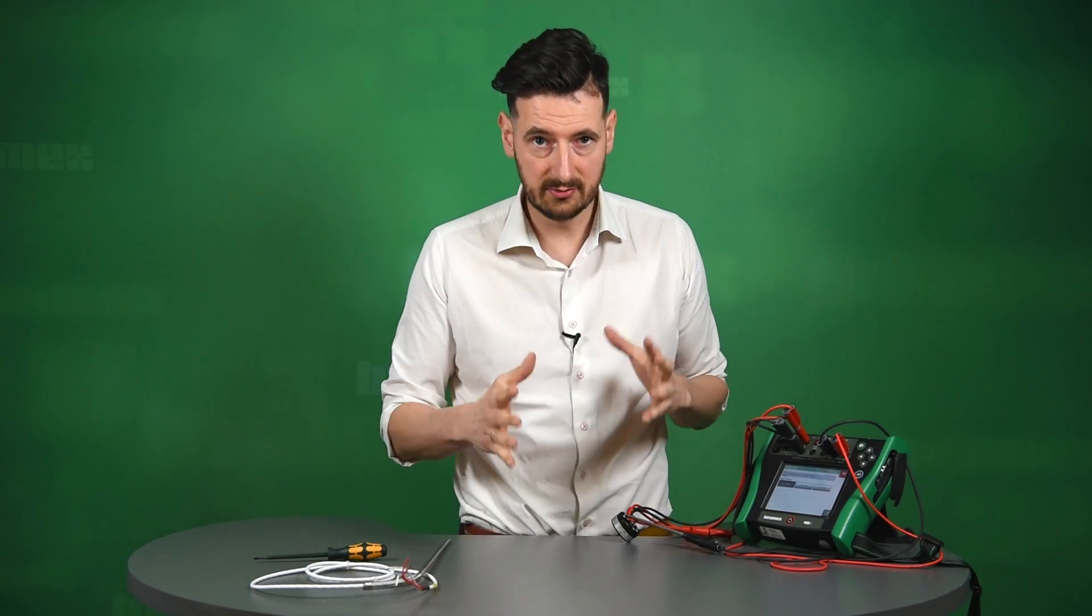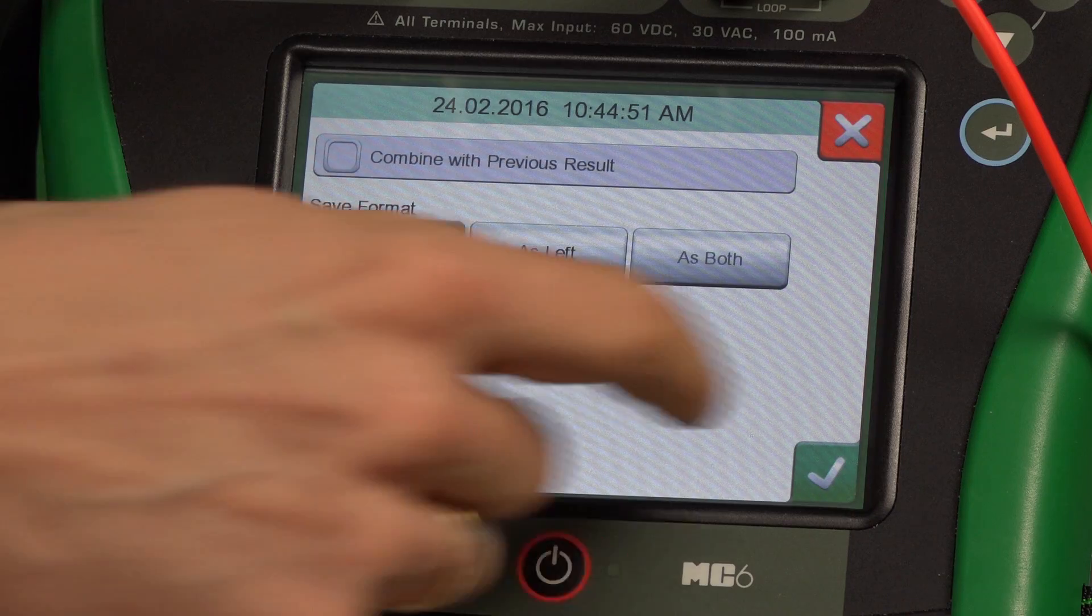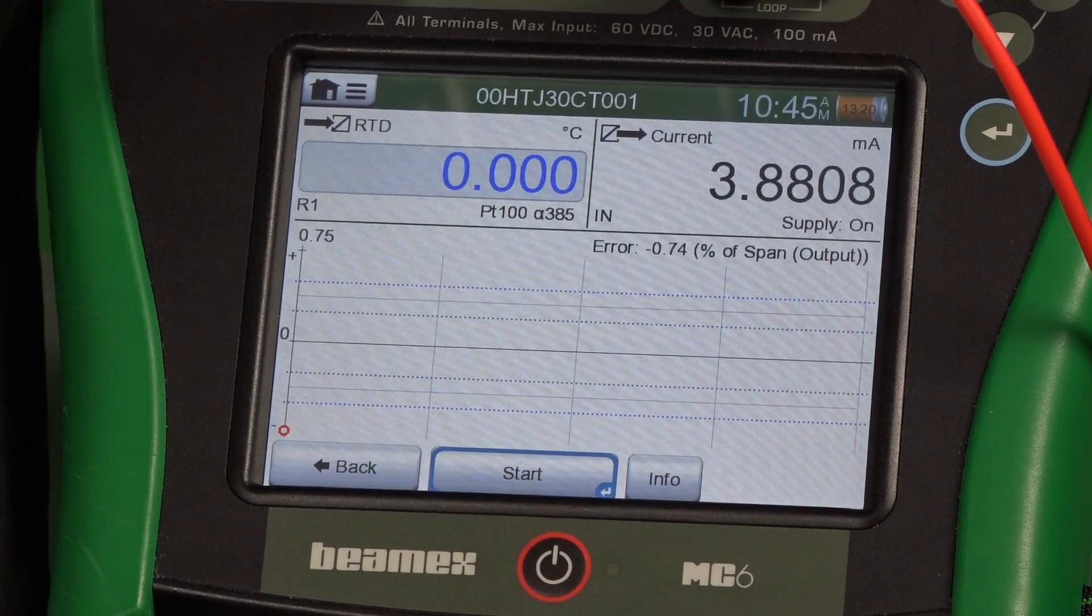Now we would have to save this. This is our as-found calibration. We could also right now finish and leave it as it is, but we don't want to leave a failed calibration. So we're going to save it as found, and we're going to right now try to bring it back to spec and do another calibration as left.